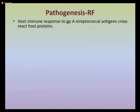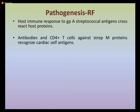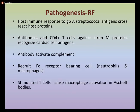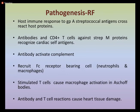At the molecular level, the host immune response to group A streptococcal antigens cross-reacts with host proteins. Antibodies and CD4+ T cells act against streptococcal M proteins and recognize cardiac self-antigens. These antibodies activate the complement system and recruit Fc receptor-bearing cells, especially neutrophils and macrophages. Stimulated T-cells then cause macrophage activation in the Aschoff bodies, and both antibody and T-cell reactions finally cause heart tissue damage.